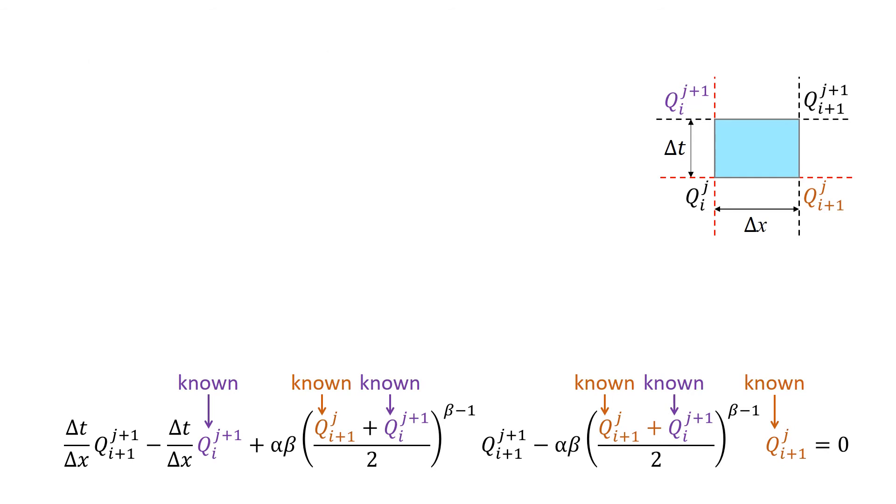Thus, the only unknown value is Q_i+1j+1, which appears in two terms.